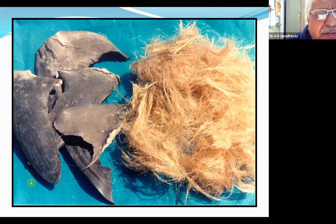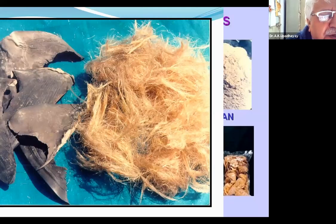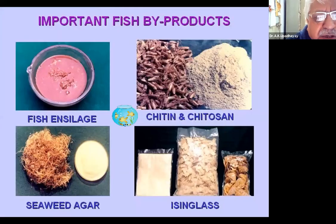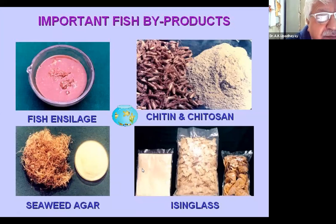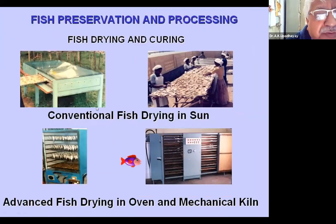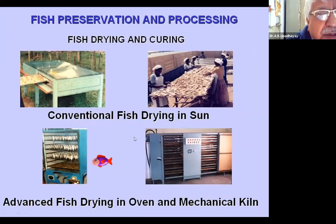Other byproducts include shark fins, shark fin rays, fish silage, chitin and chitosan, seaweed, and ice. These are the traditional conventional methods of fish drying and cured products.